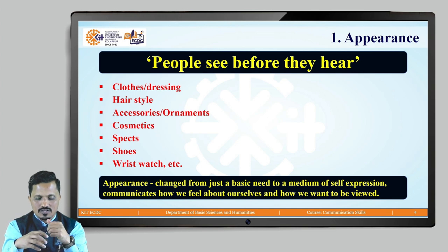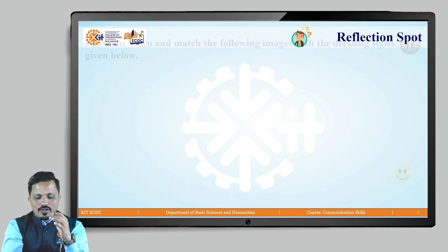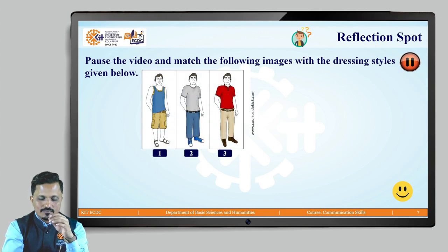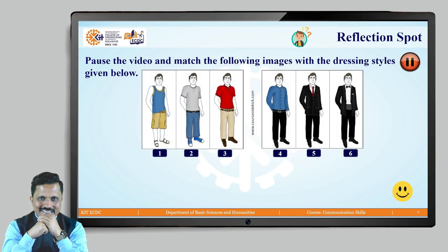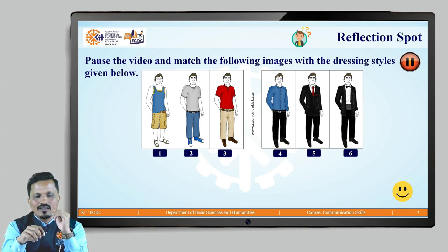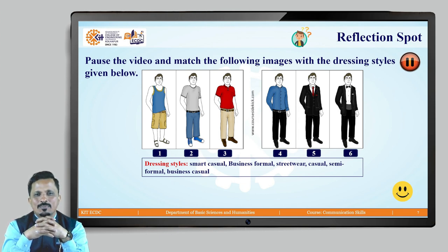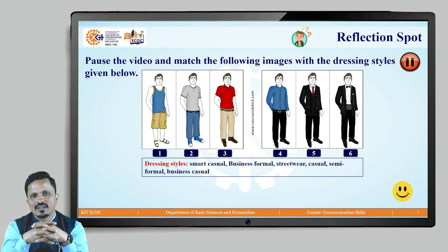Here is a reflection spot for you. Pause the video and try to match the following images with the dressing styles given: smart casual, business formal, streetwear, casual, semi-formal, and business casual. There are six images — match each number with the correct dressing style based on the clothing of the person shown.